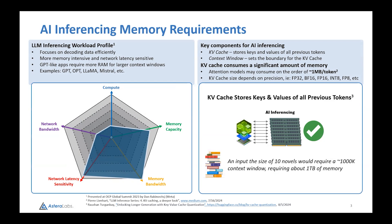This information is gathered from a really good article written by Pierre Leinhardt called LLM Inference Series focused on KV caching. The KV cache size really depends on the precision of the model. LLAMA 3.1 recently came out, and its original precision is FP16. The model itself requires about 810 gigabytes of memory.